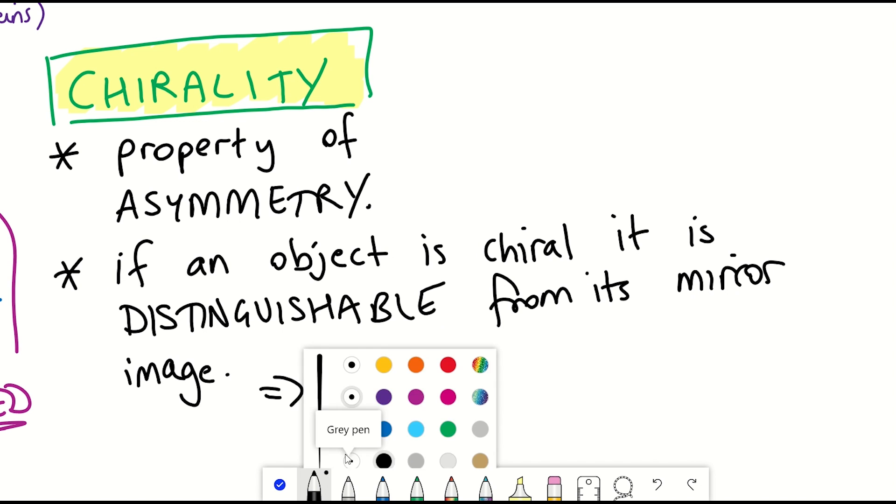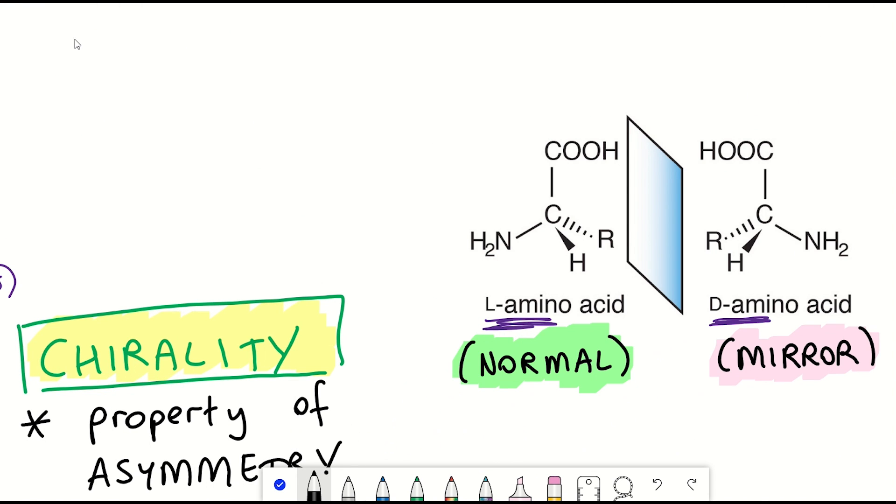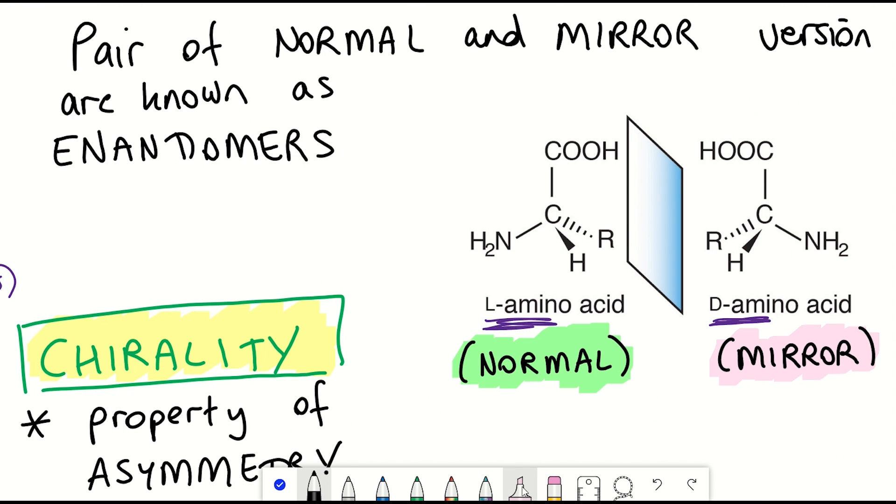That is, it cannot be superimposed onto it. And so you have a chiral object and its mirror image, and together they're known as enantiomers.